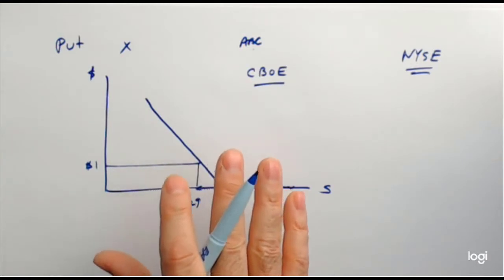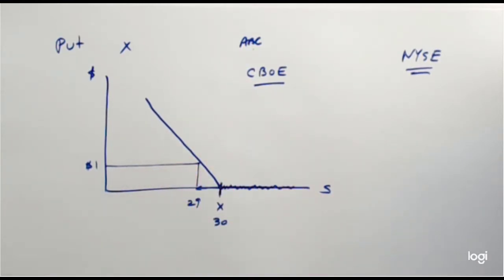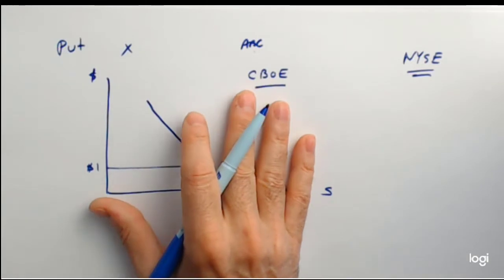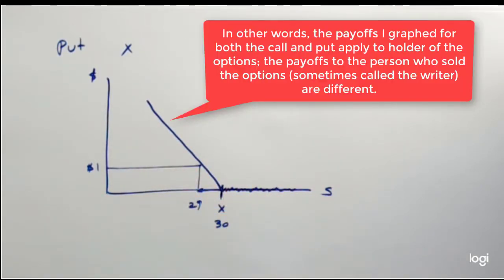What I've shown you so far is a call and a put from the holder's perspective — you basically bought the option. What we'll cover in later chapters is where you bought it from, because somebody had to sell it to you. Whoever sold it to you must have had the opposite position. If you buy a call option, you are bullish on the underlying stock; if you sell the call option, you are bearish on the underlying stock — you expect the underlying stock to fall. We'll cover the seller's perspective in a later chapter.